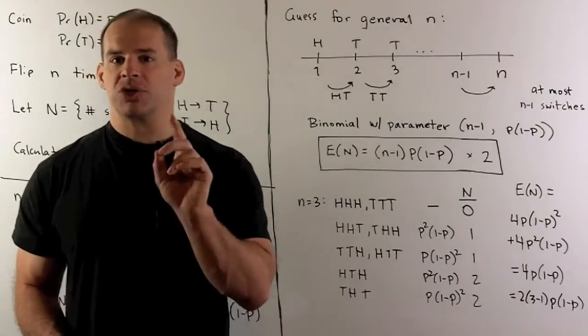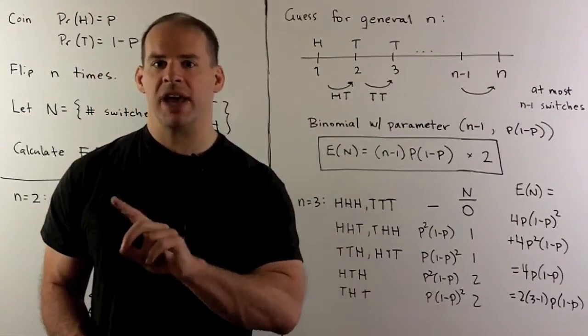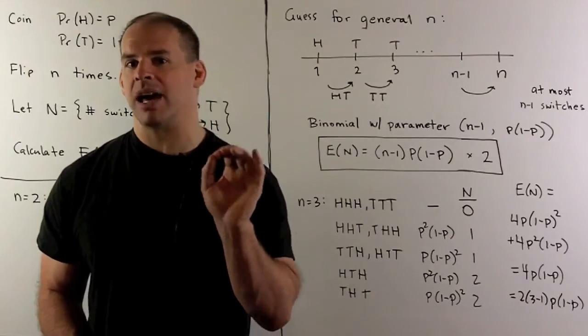Now, the probability of getting a switch is always going to be the same, whether it's heads going to tails or tails going to heads. It's going to be P times one minus P.